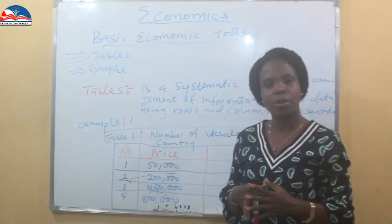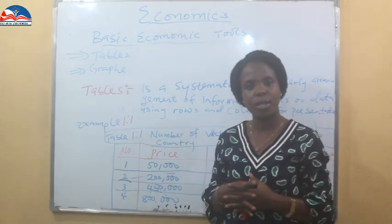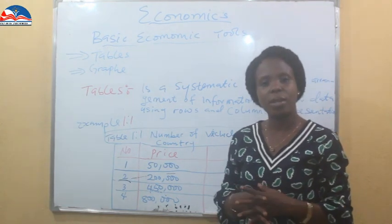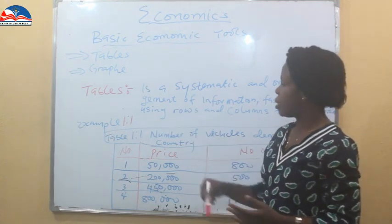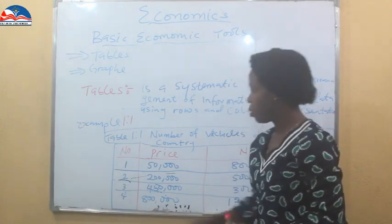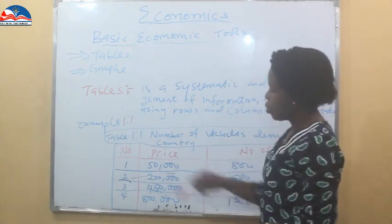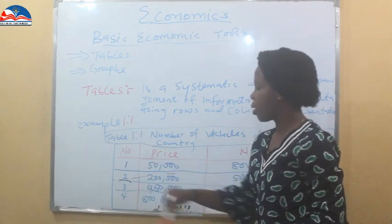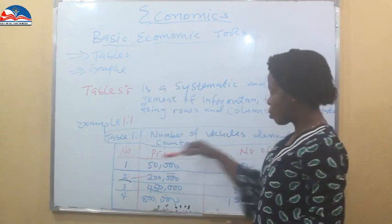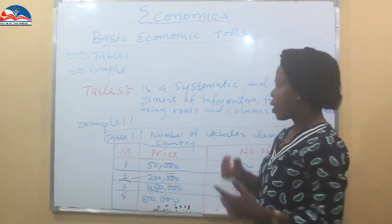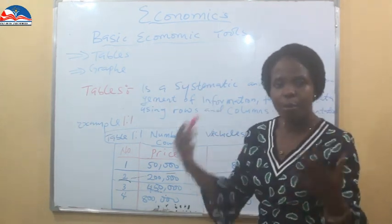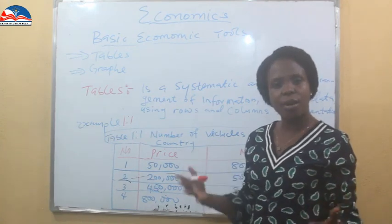I want to use the illustration on the board to show you that, and we will use the illustration to talk about the features or characteristics of a table. You can see this is a table — these are the rows and these are the columns. The rows are horizontal and the columns are vertical. These tables are used to present and analyze economic problems.